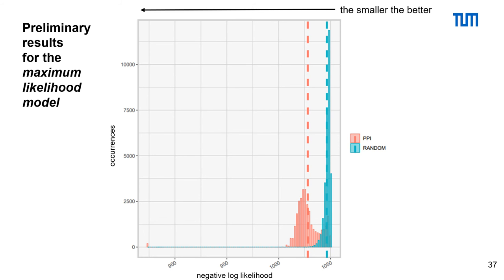GenEP Seeker is not published yet. However, we have some preliminary results using the maximum likelihood model. To evaluate the impact of the PPI-based SNP-SNP interaction network, we generated a degree-preserving random SNP-SNP interaction network. This means we first build a PPI-based SNP-SNP interaction network and then rotate the edges, so the SNPs themselves do not lose any edges but are connected to other random SNPs.